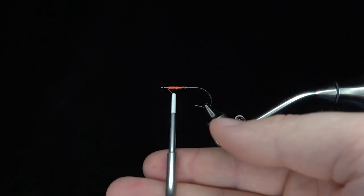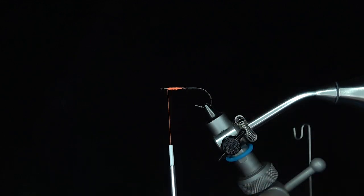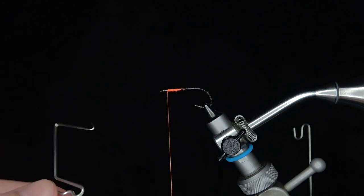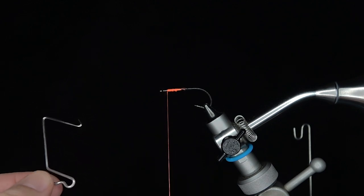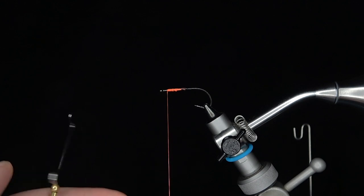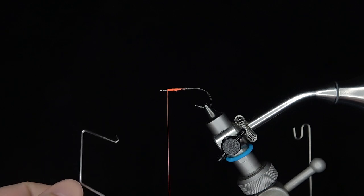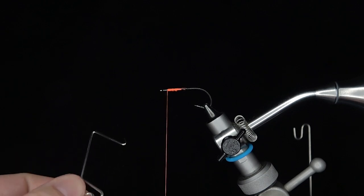If you're left handed, you're going to take your bobbin and it's going to be in your right hand, and your whip finish tool is going to be in your left hand. What you're going to do is pinch the whip finisher at the top, right here where I am, because this tool rotates and we don't want it to rotate with this beginning portion.